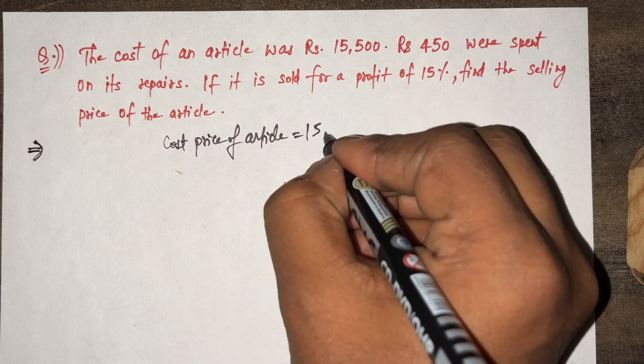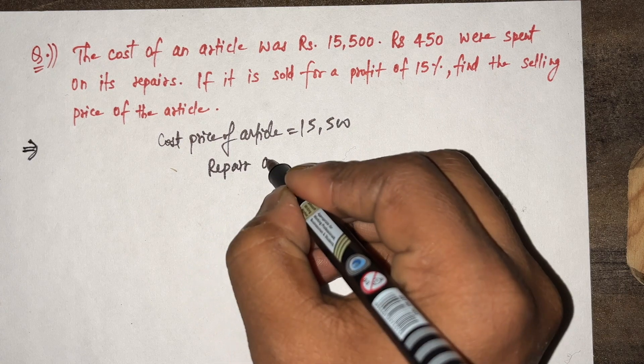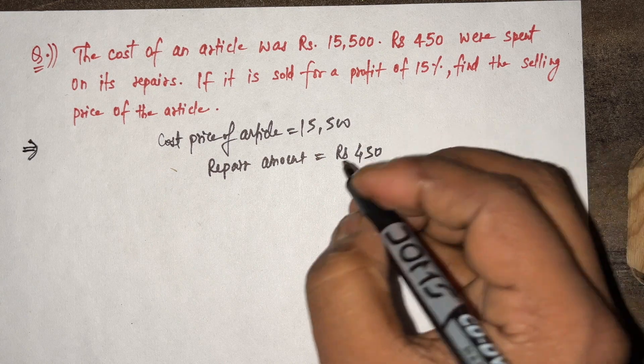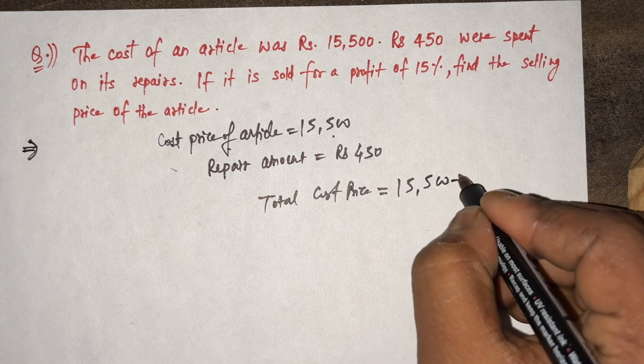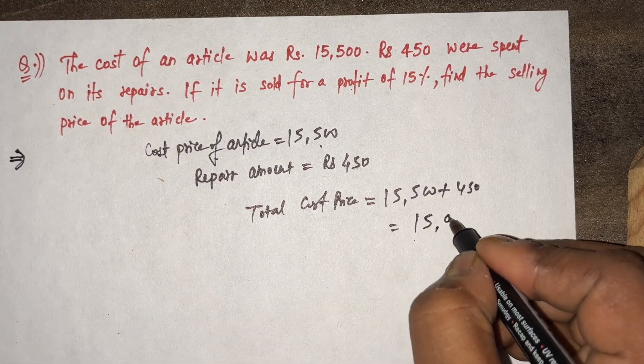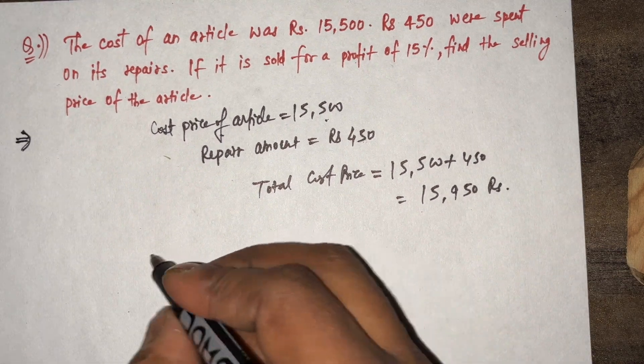Cost price of article equals 15,500. Repair amount is given as Rs. 450. Total cost price equals 15,500 plus 450 equals 15,950 rupees. It is sold at 15% profit.